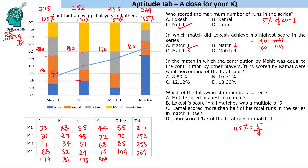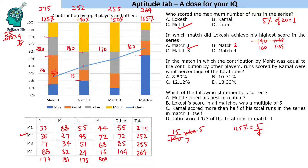Question 3: In the match where Mohit's contribution equals the contribution by other players, what percentage of total runs did Kamal score? Mohit equals others when both are 40% — that is match 2. In match 2, Kamal scored 15% out of a total of 140%. So Kamal's share of total runs = 15/140 × 100 = 75/7 ≈ 10.71 percent.